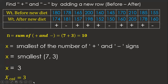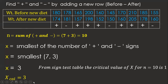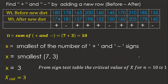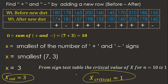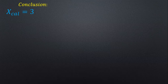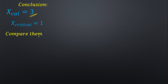Next, I find the critical value from the sign test table. For n equal to 10, I look up the critical value and get one. So x critical, also called x tabulated, equals one. Now I have two values: x calculated equals three and x critical equals one. I will compare these two.